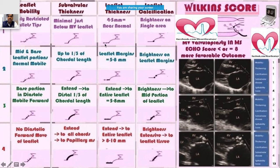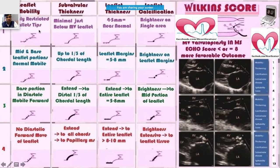For leaflet thickness, near-normal is around four to five millimeters. Thickness can increase to five to eight millimeters, and when the entire leaflet is involved it can be more than eight to ten millimeters. Similarly, you also try to focus on leaflet mobility across the four grades.